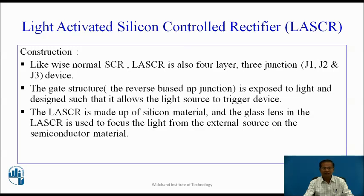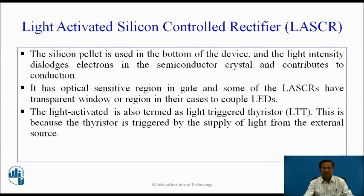Like a normal SCR, LASCR is also a four-layer, three-terminal, three-junction device. The gate structure, that is the reverse biased NP junction, is exposed to light and designed such that it allows the light source to trigger the device. The LASCR is made up of silicon material and the glass lens in the LASCR is used to focus the light from the external source on the semiconductor material. The silicon pallet is used at the bottom of the device, and the light intensity dislodges electrons in the semiconductor crystal and contributes to electrical conduction.